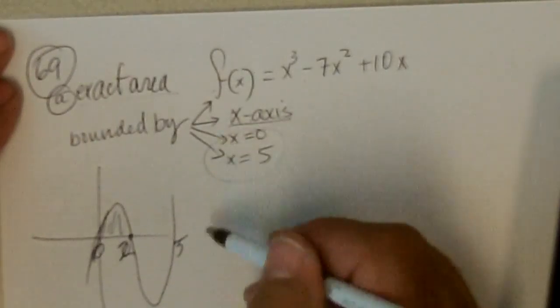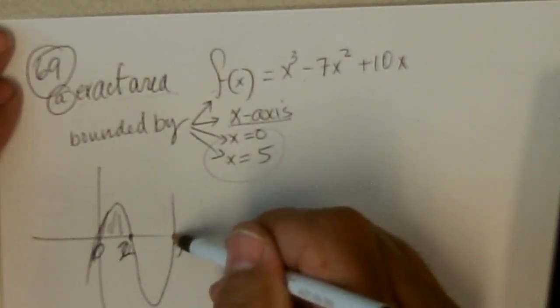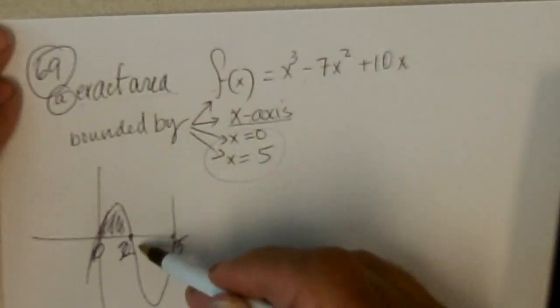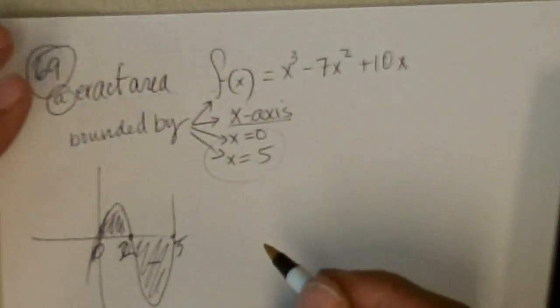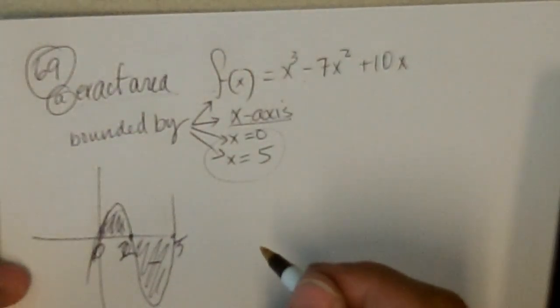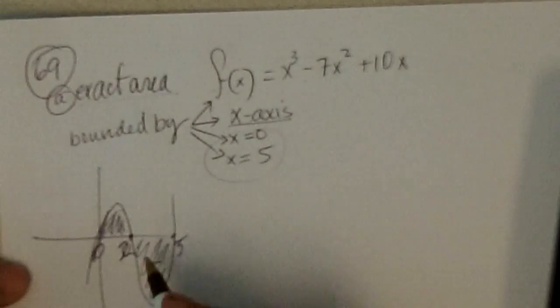we're going to get this area and add it to this area. Now this area is going to come out to be a negative area. So we need to change the sign on this part. So we're going to have to do this in two separate pieces from 0 to 2.